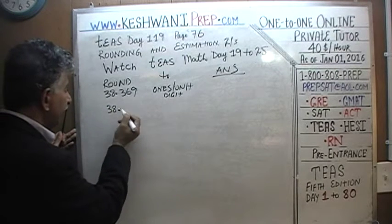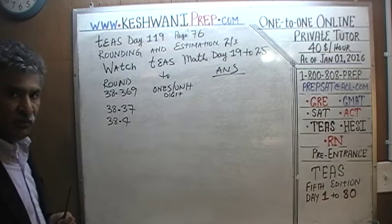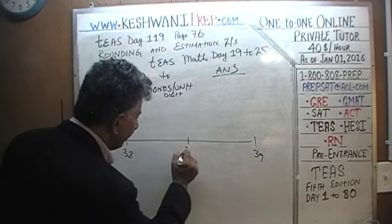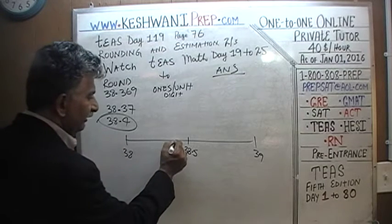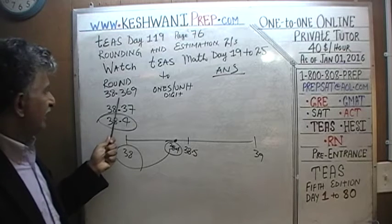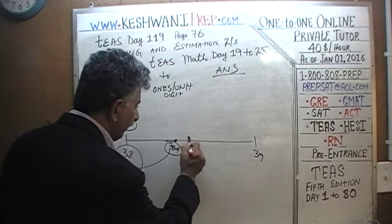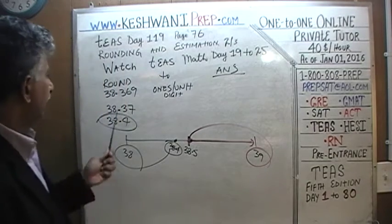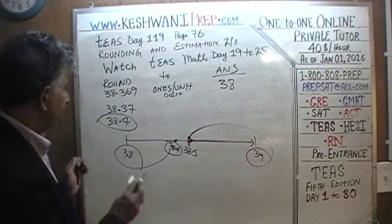If you round 38.369 to the ones digit, most people might first round it to 38.37, or even 38.4. But rounding to the ones digit, 38.369 is less than 38.5, which is the midpoint between 38 and 39. Since it is closer to 38 — anything less than 38.5 rounds down — the answer is simply 38.